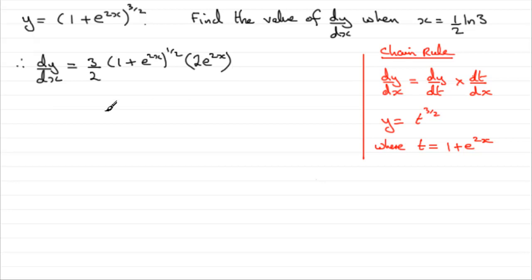Now I need to clean this up. The 2 here cancels out with that 2 there. I'd like to write the e^(2x) with the 3 and get 3e^(2x), then multiply it by (1 + e^(2x))^(1/2).